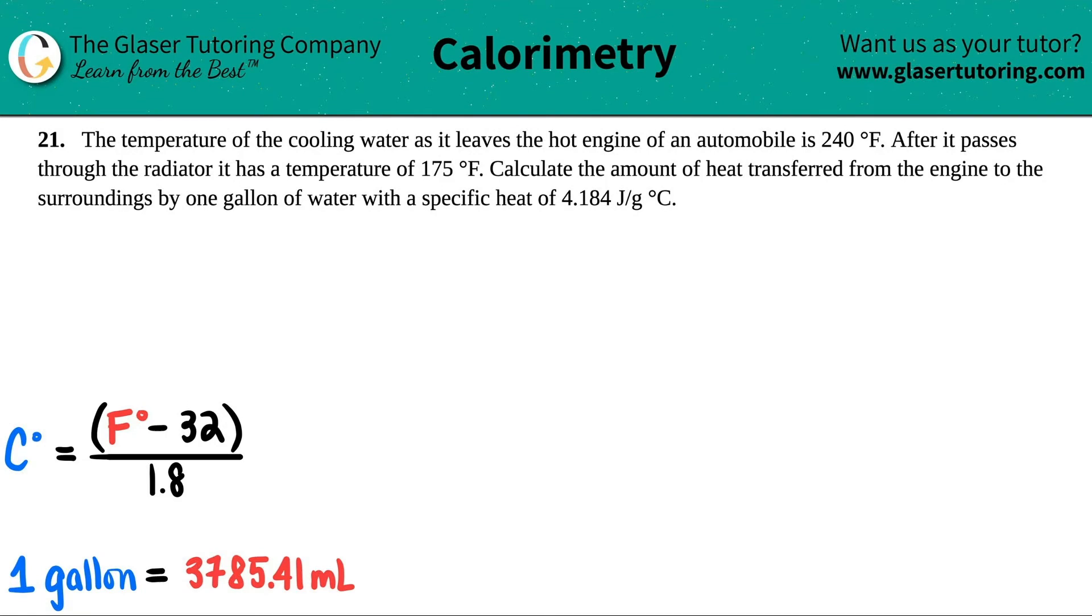Number 21. The temperature of the cooling water as it leaves the hot engine of an automobile is 240 degrees Fahrenheit. After it passes through the radiator, it has a temperature of 175 degrees Fahrenheit. Calculate the amount of heat transferred from the engine to the surroundings by one gallon of water with a specific heat of 4.184 joules per gram degrees Celsius.